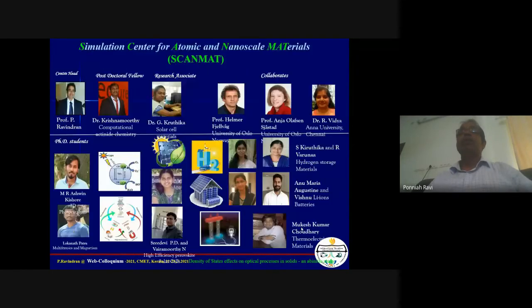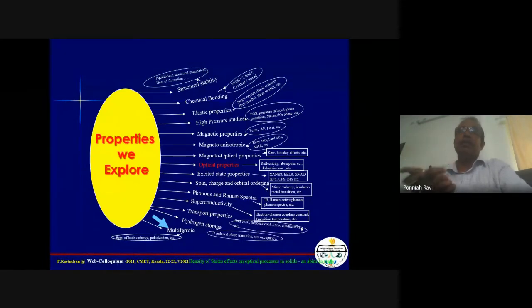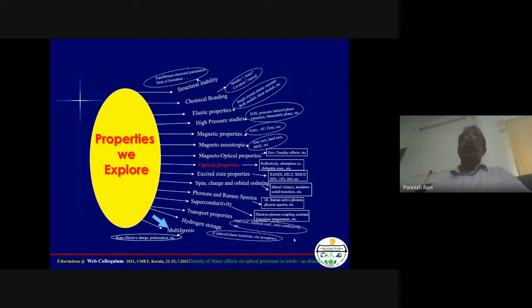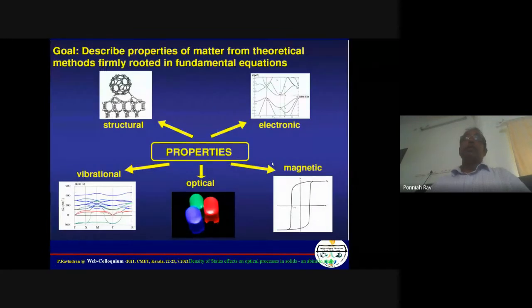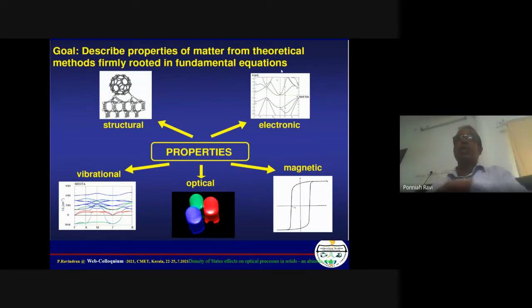For that goal, we need to develop new materials. We are a group working on various aspects of materials directly or indirectly linked to environmental friendly energy technology — photocatalysis, multi-ferroic materials for sensors, solar cells, battery materials, hydrogen storage, thermoelectric materials. We use the ab initio method called density functional theory and study a wide range of properties: magnetic, lattice dynamic, superconductivity, multi-ferroic, and optical properties — the theme of this colloquium.